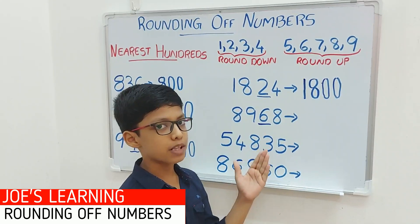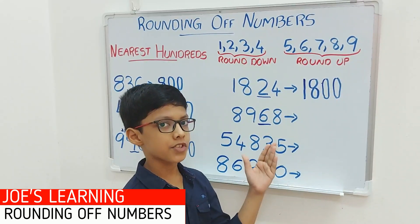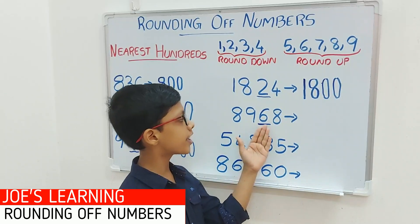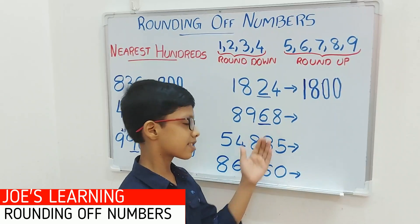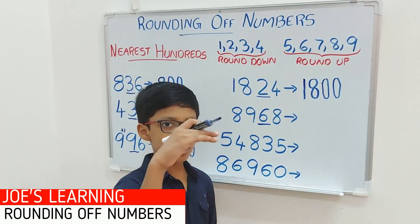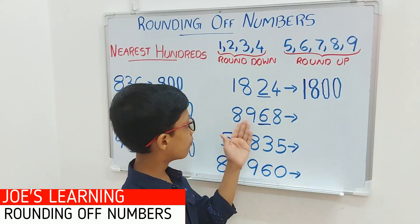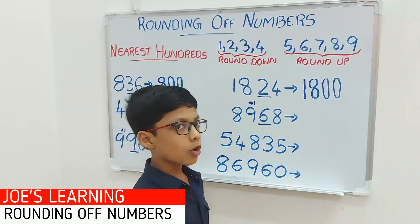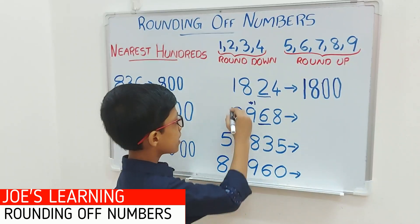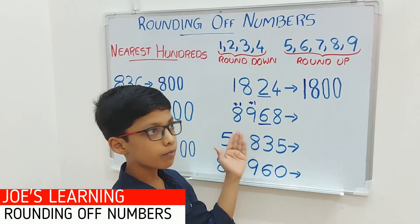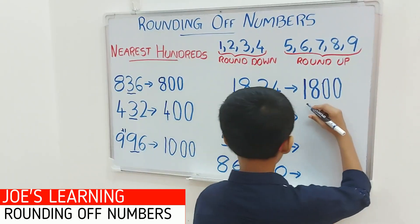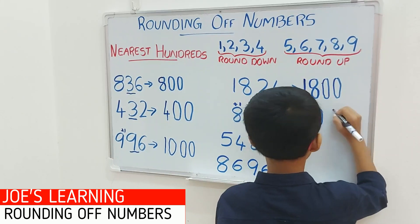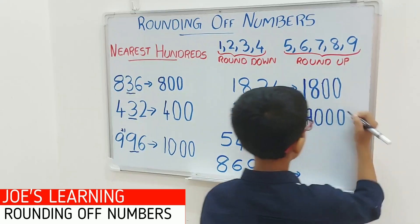Now let's take a look at this example, that is 8968. First you have to look at the digit in the tens space — 6 is in the tens space. We compare it with 5: 6 is greater than 5. So we have to put a 0 in the ones and tens space and add 1 to the hundreds space. 9 plus 1 equals 10, so we carry over to the thousands space — 8 plus 1 is 9. So 8968 rounded off to its nearest hundreds equals 9000.